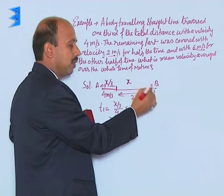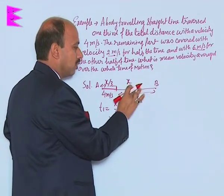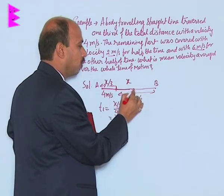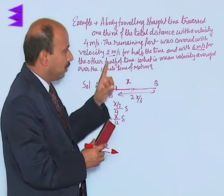So whatever is the time taken from here to here, suppose this is the half time. So suppose from here to here, whatever is the time taken, the first half we can assume is t2.